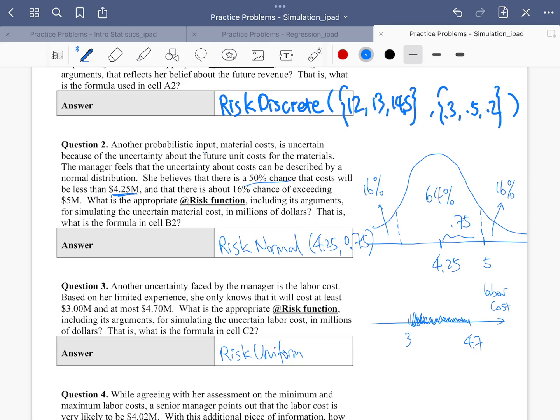And risk uniform takes two arguments. The first argument is going to be the minimum value, 3. And the second argument is just going to be the maximum value, which is $4.7. So this one is fairly easy, right?